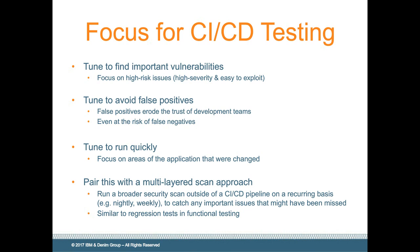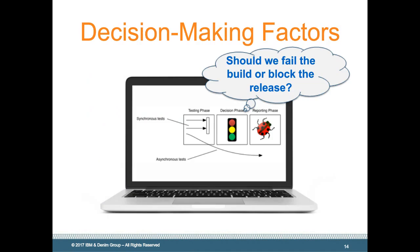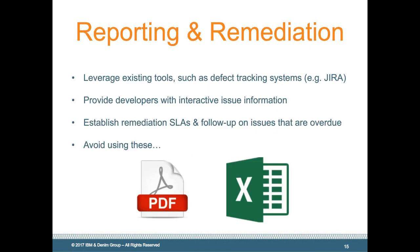Beyond running the scan and integrating into tooling, it's also important to consider whether you want to pass or fail a build, or block a release based on findings, and what those criteria are. You also need to consider reporting and other stakeholders involved beyond developers. Even tying in with a defect tracking tool like JIRA is very important — it's really not just about finding issues anymore, but about fixing them in the whole cycle.